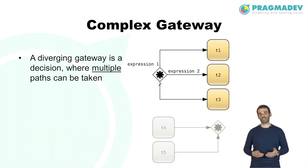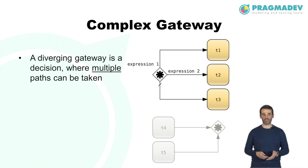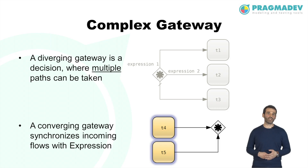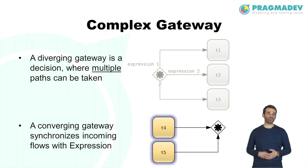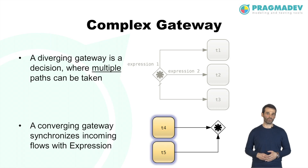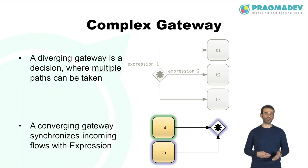In the diverging complex gateway, paths are determined by condition expressions on the outgoing sequence flows, similar to the inclusive gateway. A converging complex gateway models complex synchronization behavior using an expression to describe precise behavior. For example, the expression could specify that one out of two incoming sequence flows from T4 and T5 is needed to activate the gateway, meaning taking either path will trigger it.